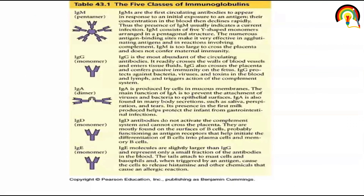IgM are the first circulating antibodies to appear in response to initial exposure to an antigen. Their concentration in the blood then declines rapidly; thus the presence of IgM usually indicates a current infection. IgM consists of five Y-shaped monomers arranged as a pentamer, giving it 10 antigen binding sites. IgM is too large to cross the placenta and does not confer maternal immunity.